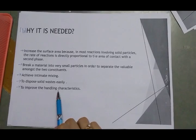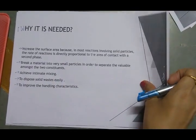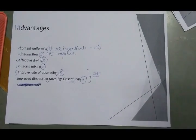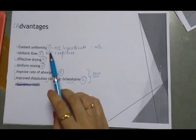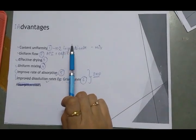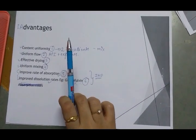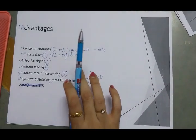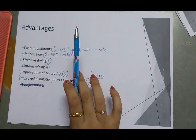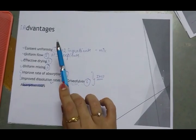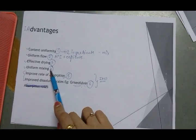Sometimes, to improve flow property and to facilitate handling characteristics, size reduction is done. Now, talking about the pharmaceutical advantages of size reduction, the most important advantage is that it leads to content uniformity. When a particular API or drug is mixed with two or more ingredients, if the particle size is reduced and managed, it is assured that the content is uniformly mixed and each and every particle of API is efficiently mixed with each and every other ingredient or excipient effectively.